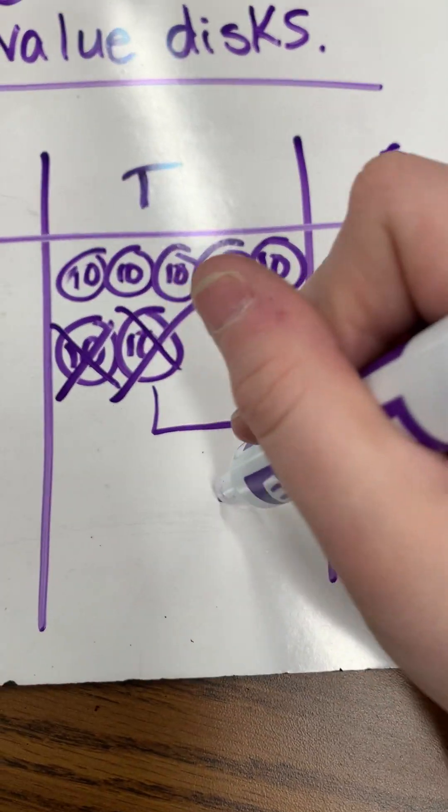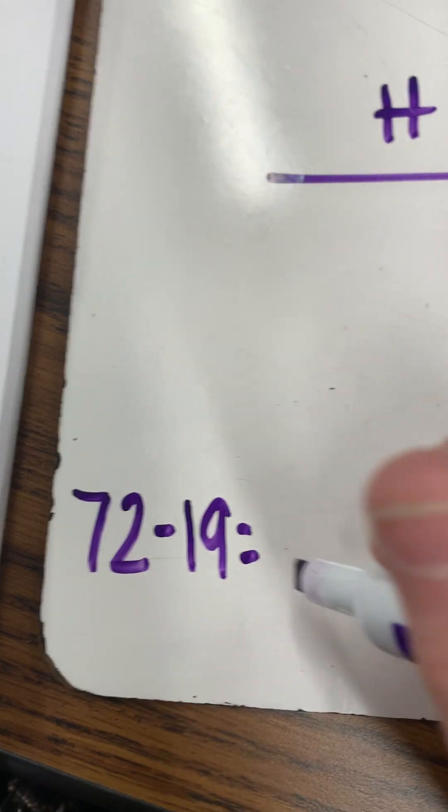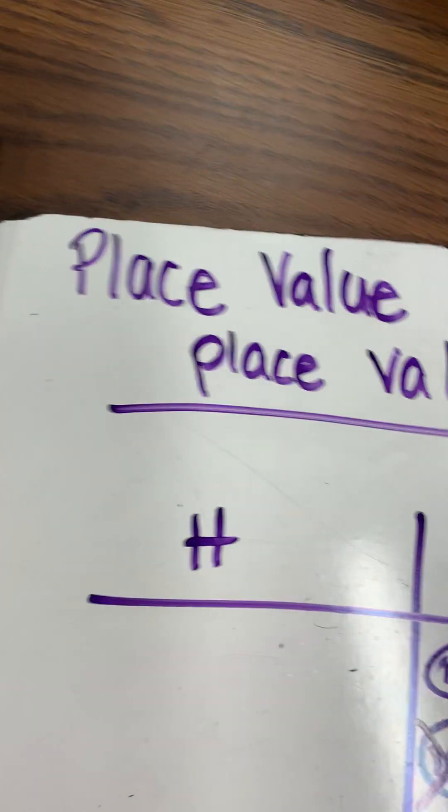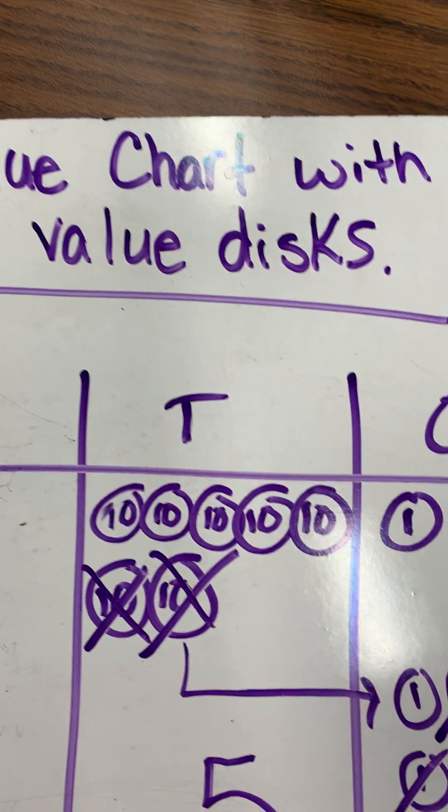We now have 5 left over, so our answer is 53. And that is how you subtract using the place value chart with place value disks.